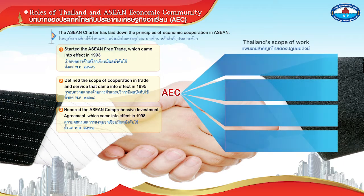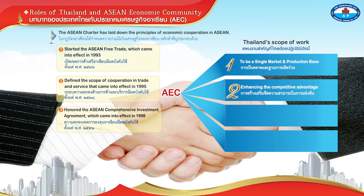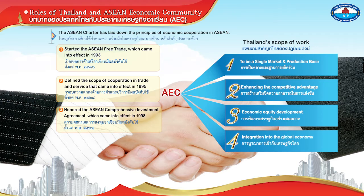Thailand's scope of work covers four areas: 1. To be a single market and production base. 2. Enhancing the competitive advantage. 3. Economic equity development. 4. Integration into the global economy.